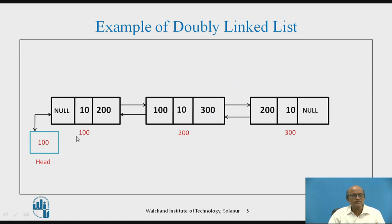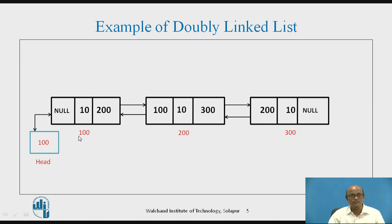Here, '100' indicates the address. To understand the concept, we assume this address is 100, though on an actual computer it may be any number. These values are shown as the addresses of memory locations. So at memory location 100, this node is stored where the data part is 10, and the next pointer holds the address of the next node stored in that address part.